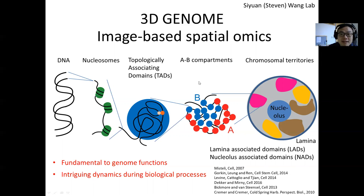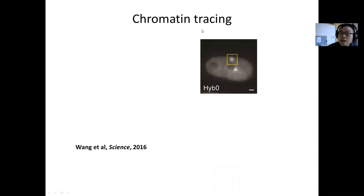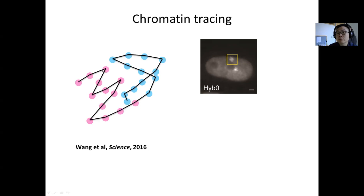My whole research program started from this very simple question that people have not been able to answer for decades: what is the 3D folding path of chromatin at length scales above the nucleosomes? To answer this question, four years ago we invented a new technique called chromatin tracing — a technique based on highly multiplexed DNA imaging to sequentially pinpoint numerous genomic loci in 3D along a single chromosome and link them to super-resolve the 3D chromatin folding organization.